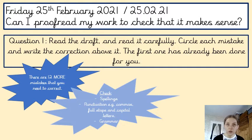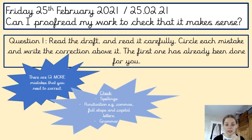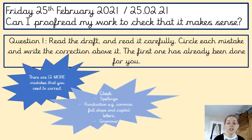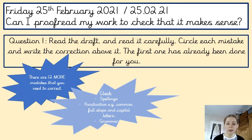The first mistake has already been done for you as an example on your page. There are 12 more mistakes to find — 13 in total. They involve spellings, punctuation, and grammar. Check for spelling mistakes where letters might be missing or in the wrong place. Check for commas, full stops, and capital letters used correctly. For grammar, check things like whether an apostrophe has been added when abbreviating 'cannot' to 'can't' to show two words have been joined together.